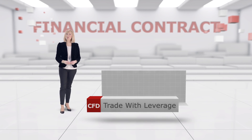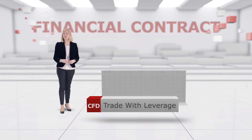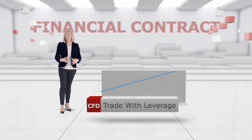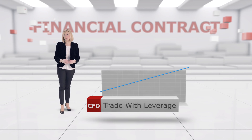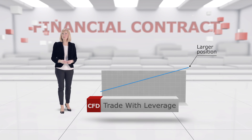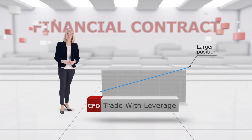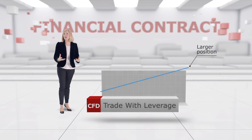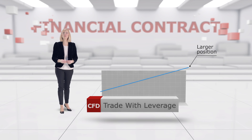CFDs allow you to trade with leverage. This means that you can trade nominal amounts that are larger than you would be able to if you were doing traditional stock trading. It allows you to put up a small margin to open a much larger position. In essence, CFDs provide a highly flexible alternative to trading shares or futures contracts the traditional way.